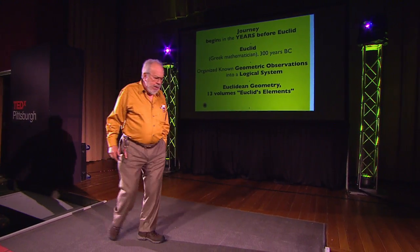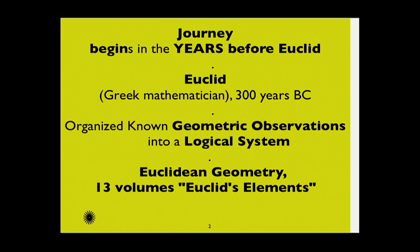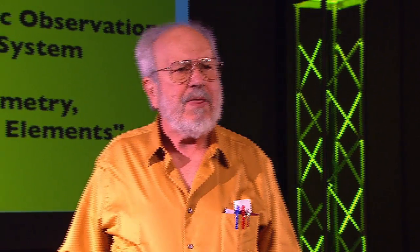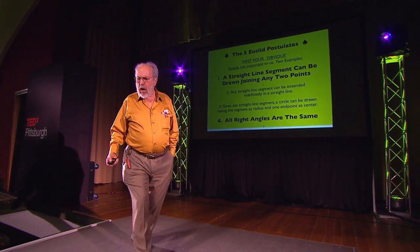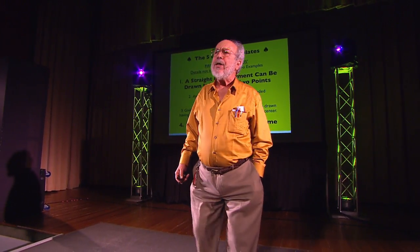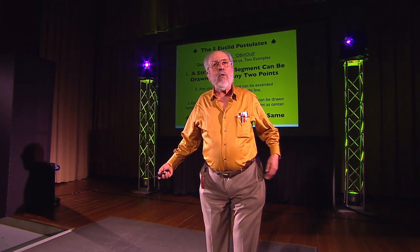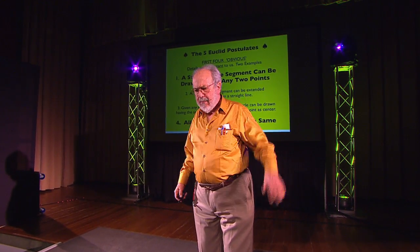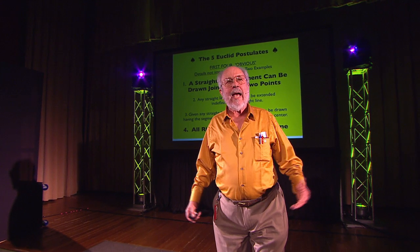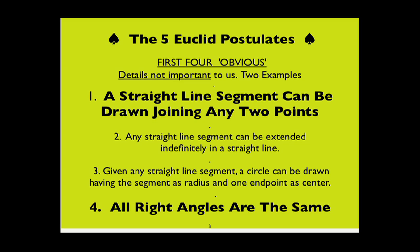Euclid took all the known geometric observations from different people before him and organized them into 13 volumes called Euclid's Elements. This was a logical system. It begins with a series of postulates, and then from the postulates he derives theorems. We're going to concentrate on one single sentence in all 13 volumes. The five starting postulates include obvious statements — a straight line segment can be drawn joining any two points, and the fourth postulate: all right angles are the same. How could anybody disagree with any of that?